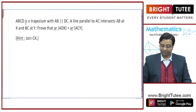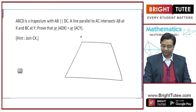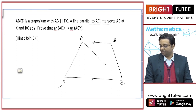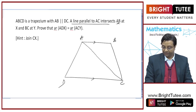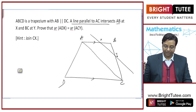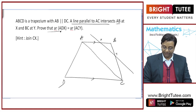Now, ABCD is a trapezium with AB parallel to DC. So let us draw a trapezium first. A line parallel to diagonal AC intersects AB at X and BC at Y. So I will draw a line parallel to AC which intersects AB at X and BC at Y. Prove that area of triangle ADX is equal to area of triangle ACY.